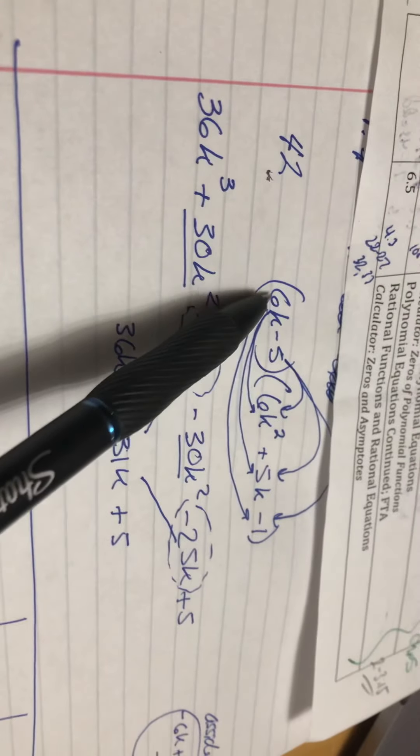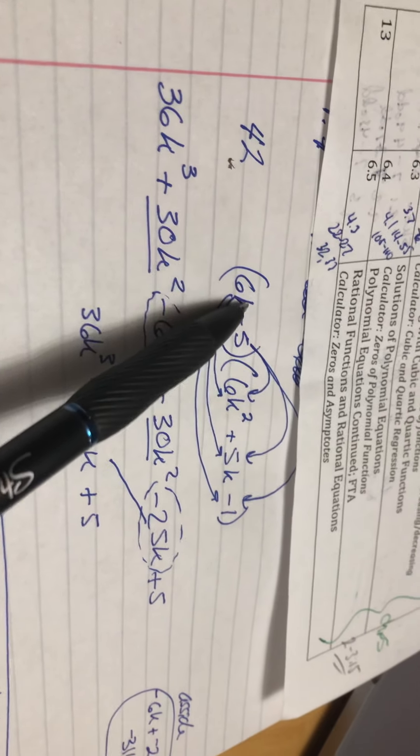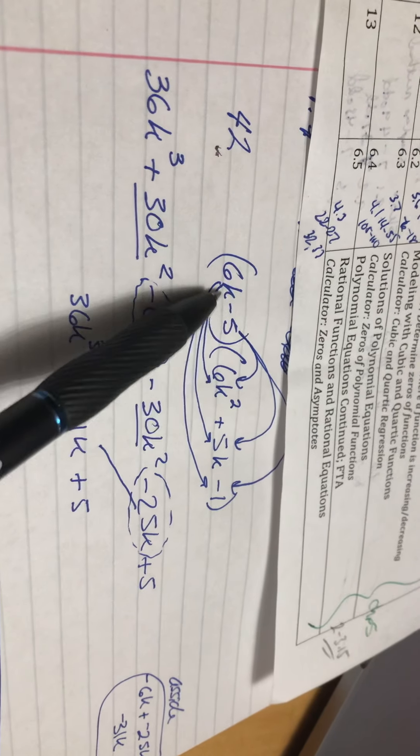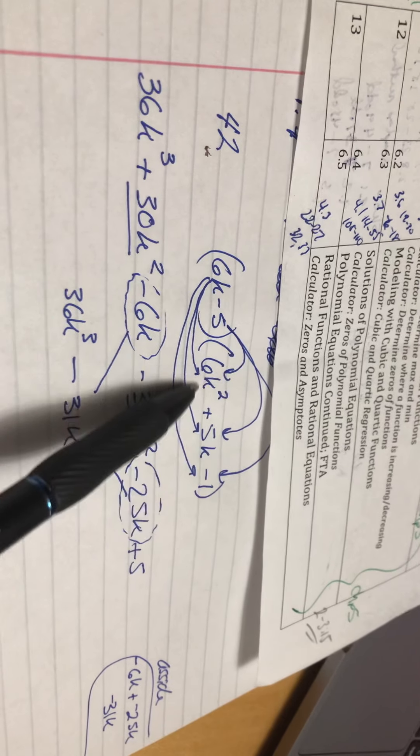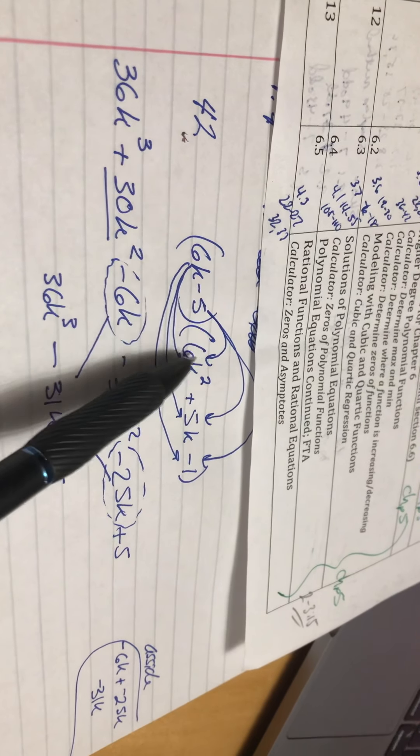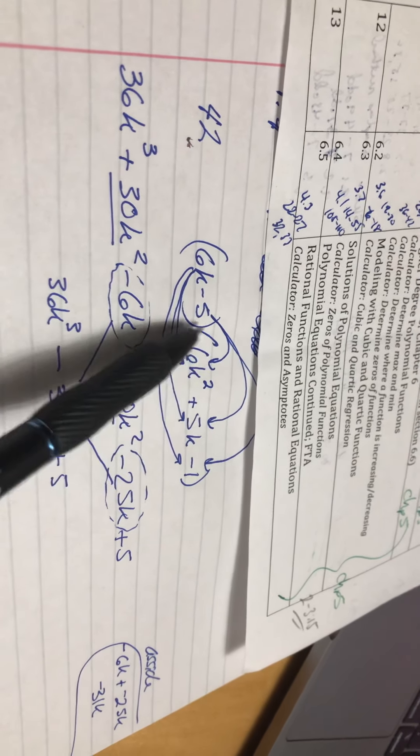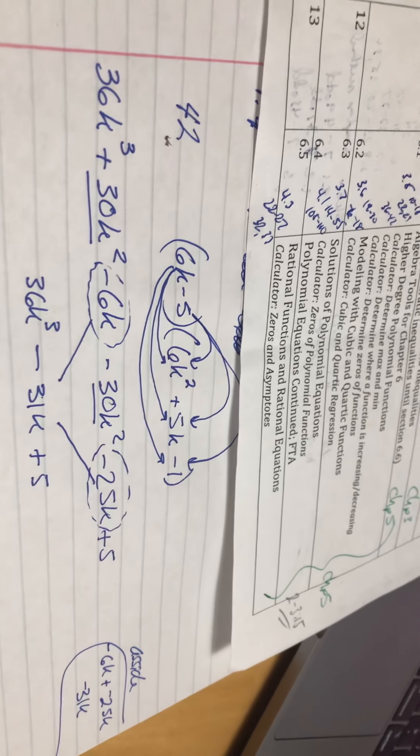So you're supposed to take each term in here and multiply it by each of the terms in the other polynomial and then you take the second term and multiply it by each of the terms in the other polynomial.